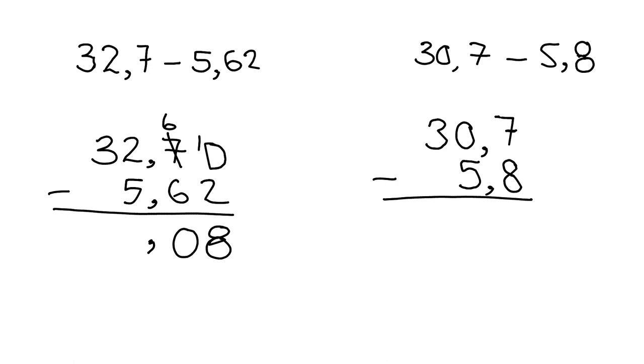Then you go to here. 2 minus 5. You can't do that, so again you need to go and take one of these. Bring it over. It becomes 12 minus 5, which gives you 7. Then 2 minus 0 gives you 2. So your answer is 27.08.